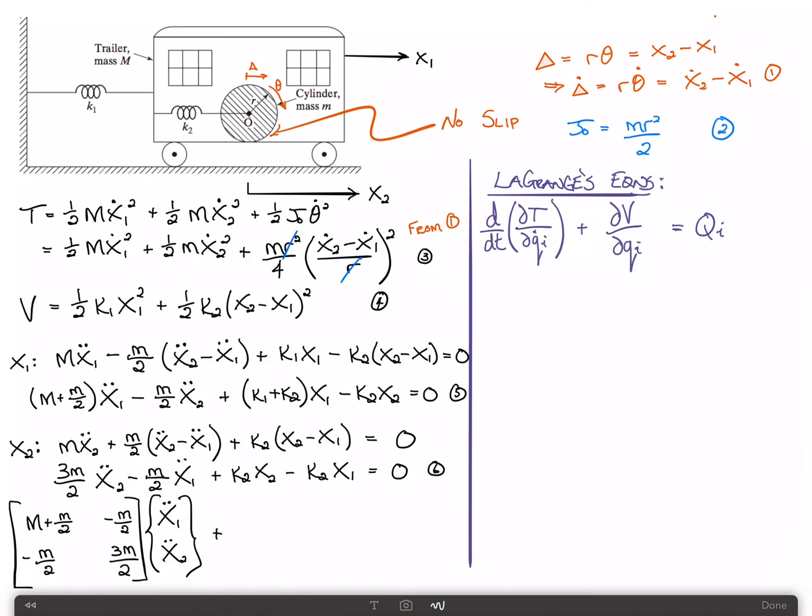And then the stiffness matrix looks like k1 plus k2, minus k2, minus k2 and plus k2. This is multiplied by the vector x1, x2, and that is equal to the zero vector. And there you have it. Those are your two equations of motion.